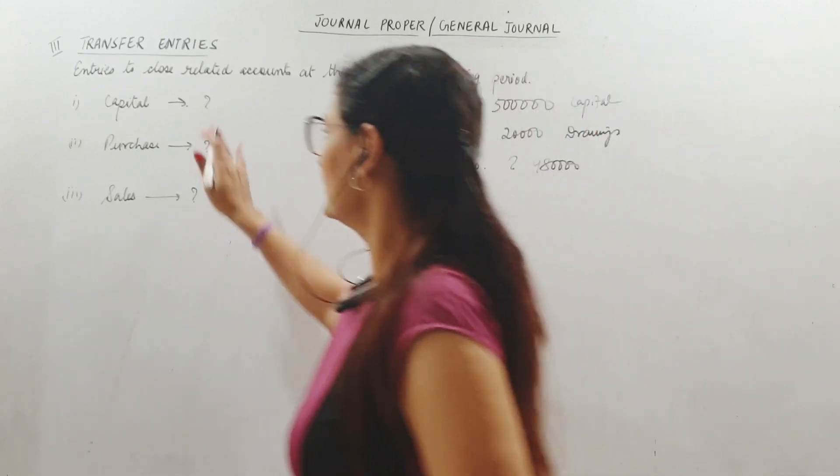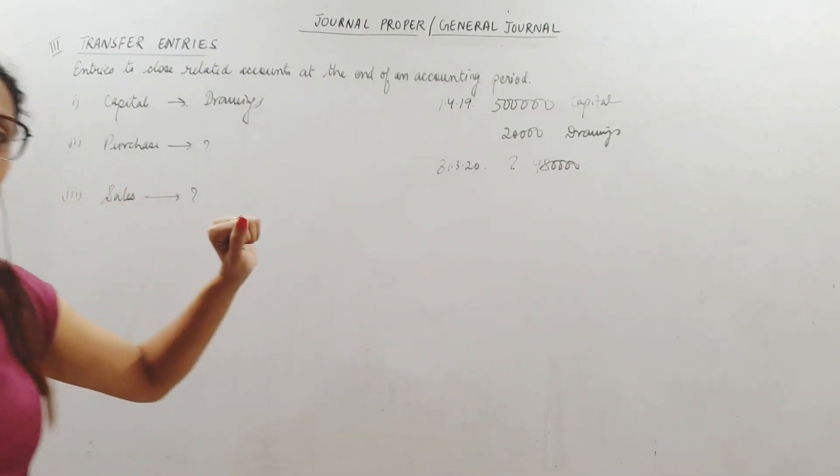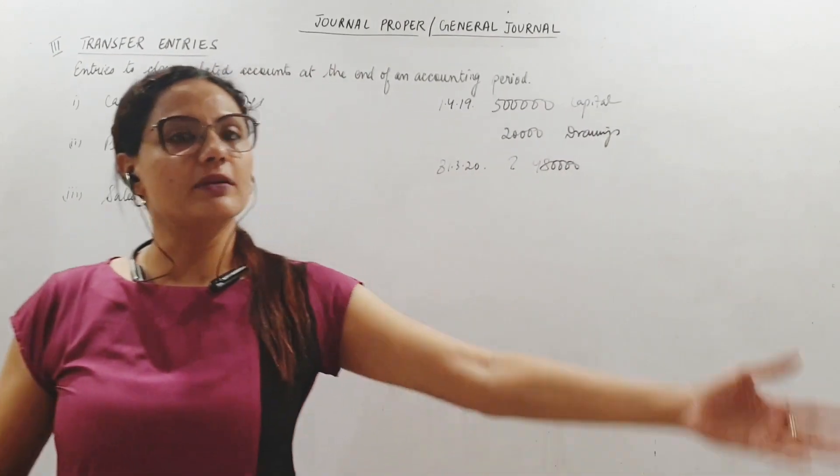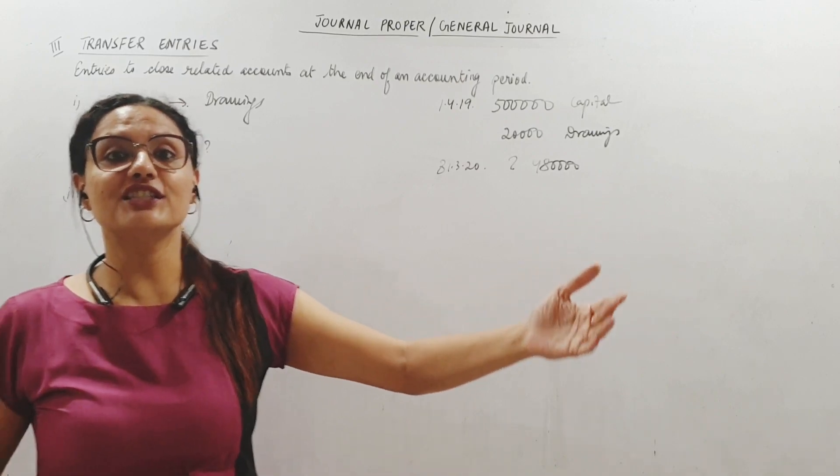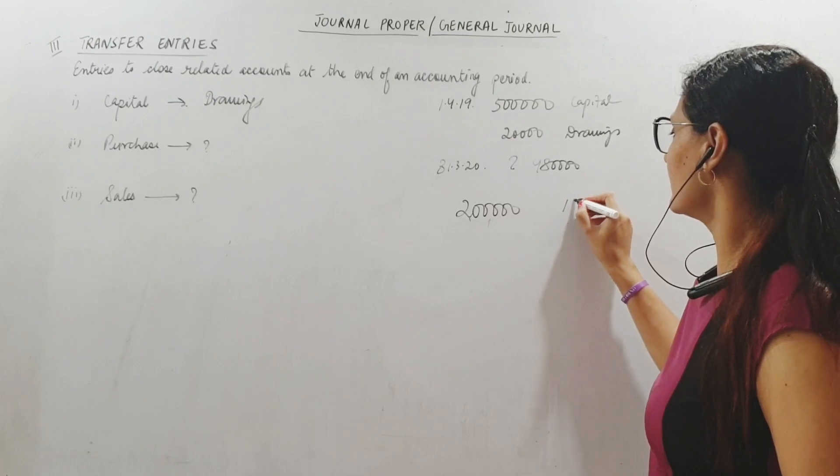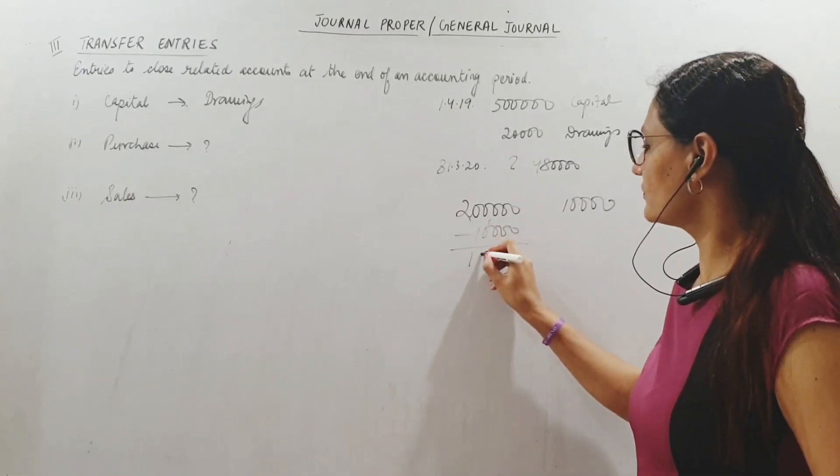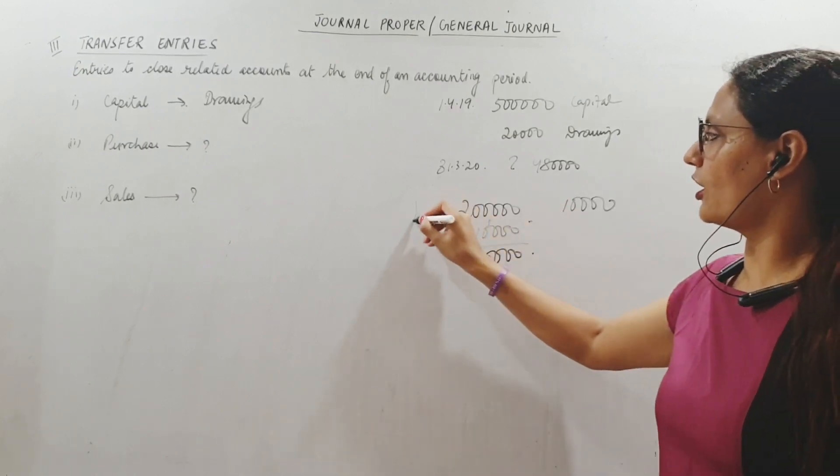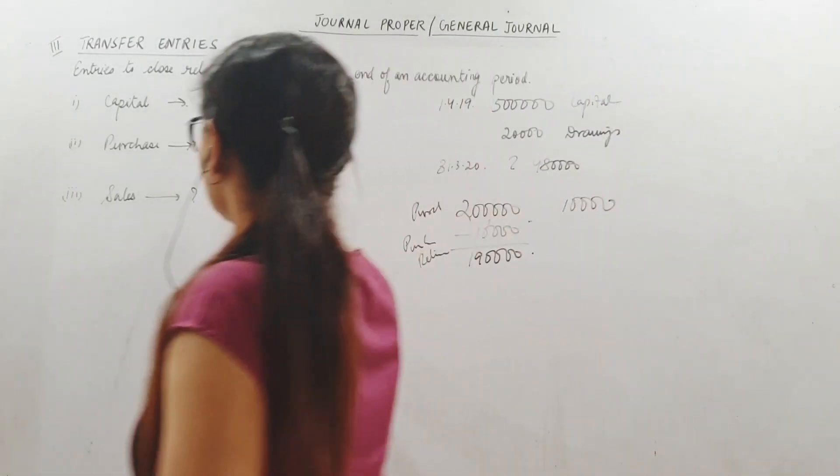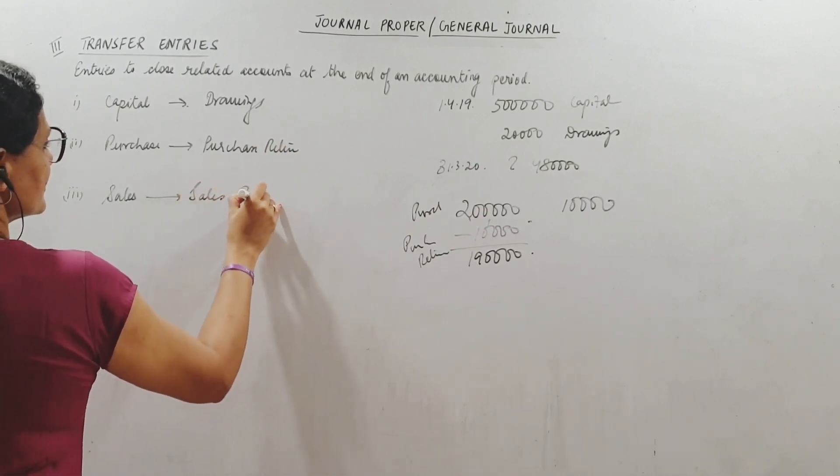Related accounts here are capital and drawings. One similar related pair is purchase and purchase return. Whenever we purchase, we debit purchase, but whenever we return, we do not credit purchase account - we credit purchase return. So if throughout the year we have purchased goods worth 2 lakhs and returned goods worth say 10,000, what is the net purchase for me? 2 lakhs minus 10,000, that is 1 lakh 90,000. And how do I get this? When I subtract from purchase the purchase return. So purchase's related account is purchase return. Similarly, sales - yes, sales return.